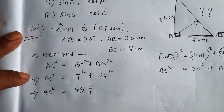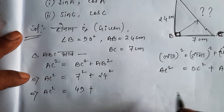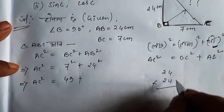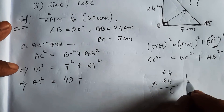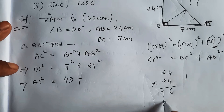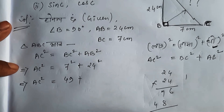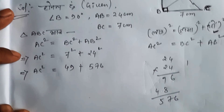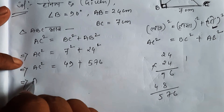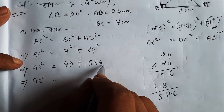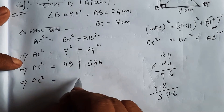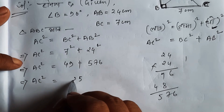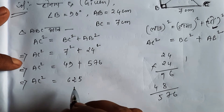24 squared means 24 into 24. 4 times 4 is 16, carry 1; 4 times 2 is 8 plus 1 is 9, giving 96. Then 2 times 4 is 8, 2 times 2 is 4, giving 480. So 96 plus 480 is 576. Then 576 plus 49 equals 625.